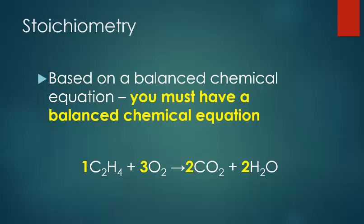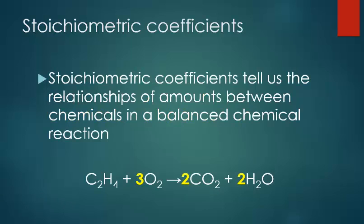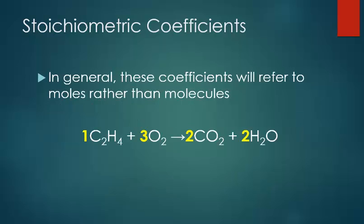Here are our coefficients in bold, and this is also a combustion reaction. The stoichiometric coefficient is 1 for ethylene, and in the past we've looked at this as 1 molecule. Ethylene reacts with 3 molecules of oxygen to form 2 molecules of carbon dioxide and 2 molecules of water, as well as heat. These stoichiometric coefficients tell us the relationships of amounts between chemicals in a balanced chemical reaction. I generally will write the 1 as a stoichiometric coefficient for clarity in this lecture.